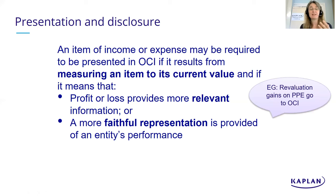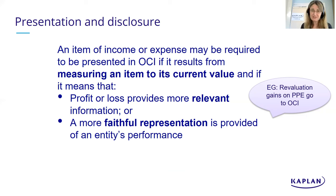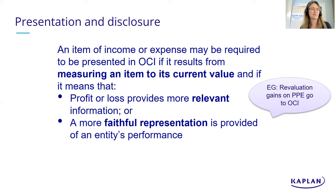A classic example is revaluation gains. If you restate property, plant, and equipment to fair value at year-end under the revaluation model in IAS 16, those revaluation gains go in other comprehensive income, not profit or loss. The reason: we're re-measuring the item to its current value, and it's not entirely relevant if market value fluctuates while you're using the asset as a head office, factory, or shop. So we exclude those gains from the statement of profit or loss.